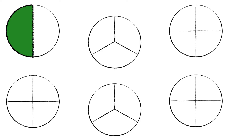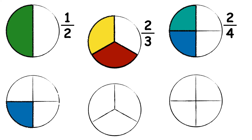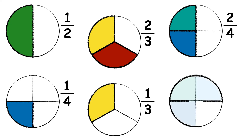One out of two pieces: one-half. Two out of three pieces: two-thirds. Two out of four pieces: two-quarters. One out of four pieces: one-quarter. One out of three pieces: one-third. And three out of four pieces: three-quarters.